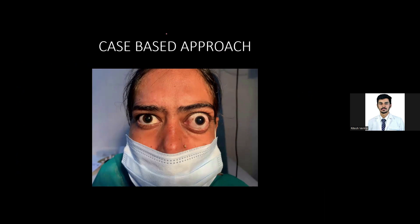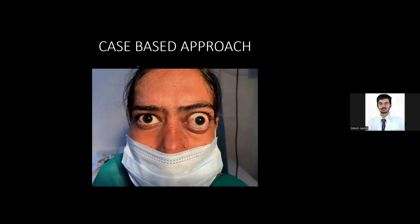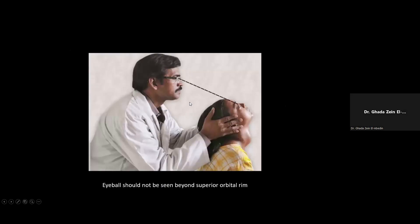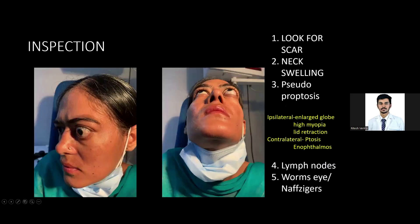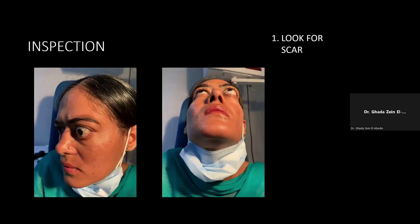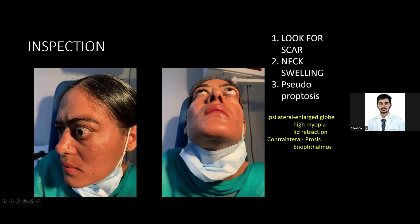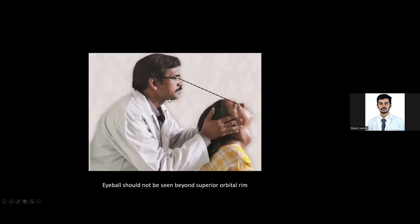If you walk into your clinical station and get this patient sitting in front of you, start your examination by looking for any scar, neck swelling, pseudoproptosis, and lymph nodes, and then do a Worm's eye view or Navziger's view.